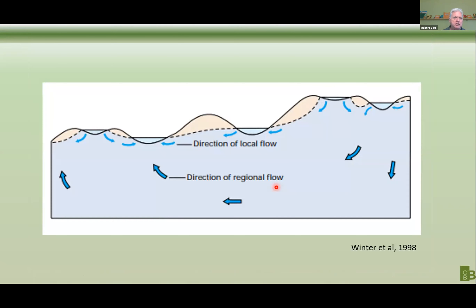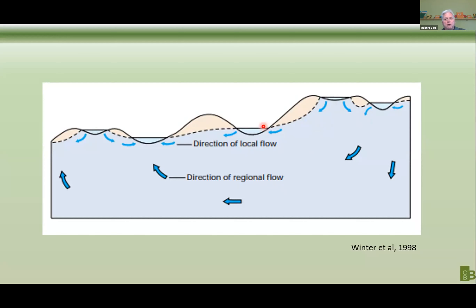Many watershed studies start looking at runoff characteristics, depressional storage, and different areas. In a system that is this dominated by groundwater, many of those methods and techniques are gone. The reason they're gone is your supply of water is moving in and through these lakes, passing from lake to lake, literally through the river corridor.